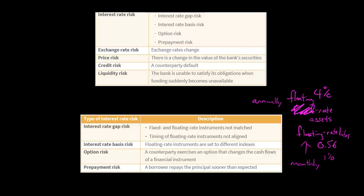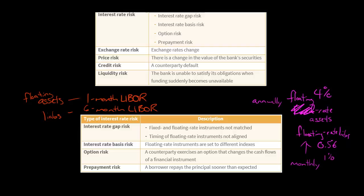Basis risk is a situation where we have different indexes involved. Let's say you have floating rate assets tied to the one-month LIBOR, and floating rate liabilities tied to the six-month LIBOR — a different index in each case. If both increased by the same amount — say 10 basis points each — we don't have an issue. But what if the six-month LIBOR increased by 30 basis points while the one-month LIBOR only increased by 10 basis points? When they're tied to different indexes and those indexes change by different amounts, that can have effects on the bank's net interest income.